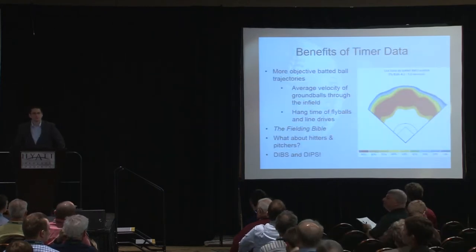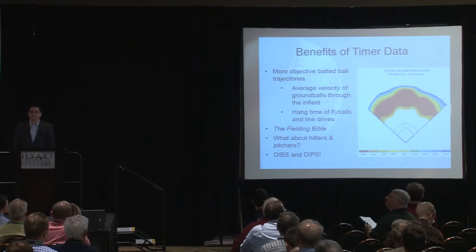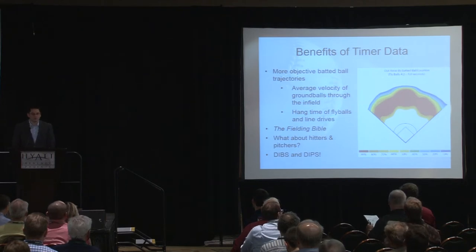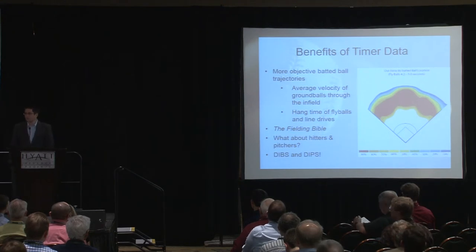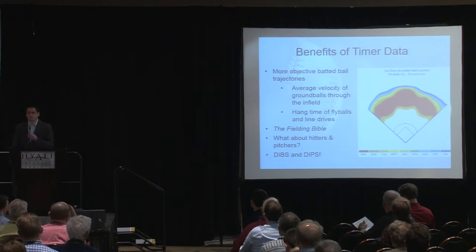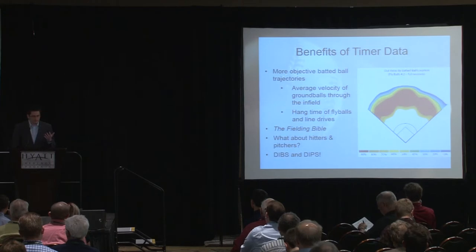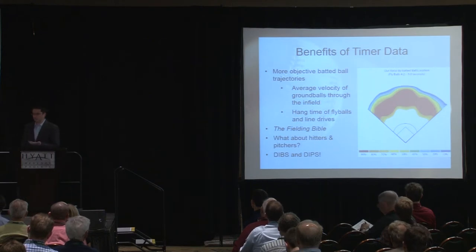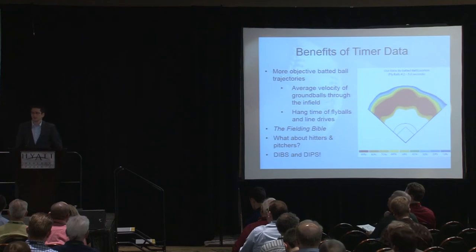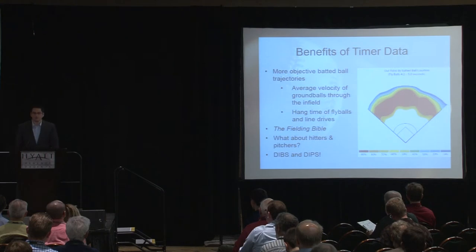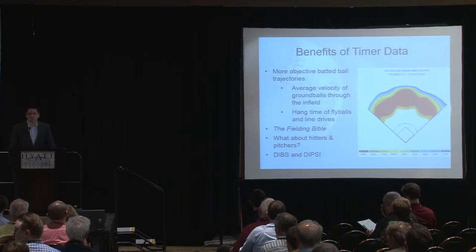I'm working with Baseball Info Solutions timer data, which includes batted ball timer information for fly balls — specifically hang time — as well as ground balls, where we track the time of the ball through the infield to get its average velocity. We combine that with hit locations and our batted ball data to get essentially the trajectory information about each batted ball.